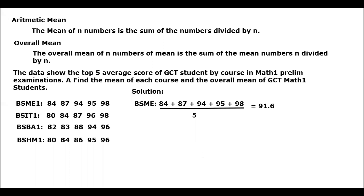Good day everyone. We have the topic arithmetic mean for your Math 1, Mathematics in the Modern World subject. This is the arithmetic mean for the measures of central tendency, Chapter 4, page 102. The arithmetic mean of n numbers is the sum of the numbers divided by n.